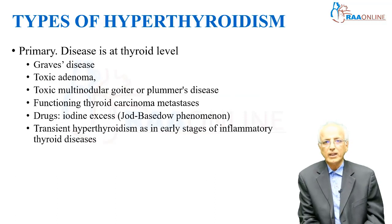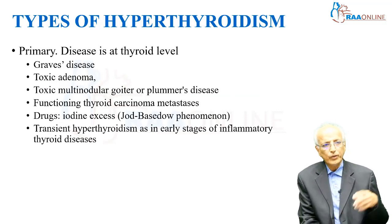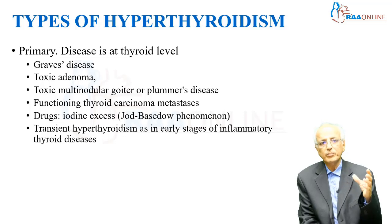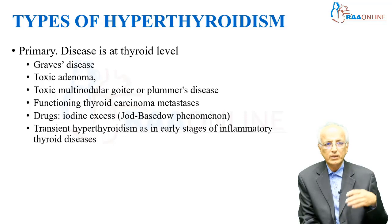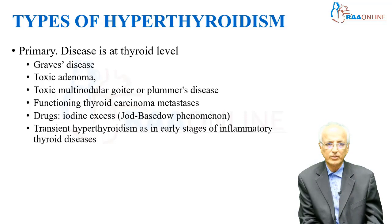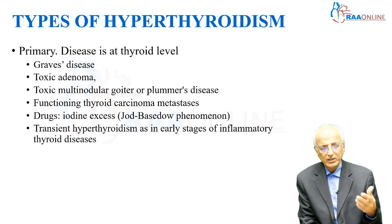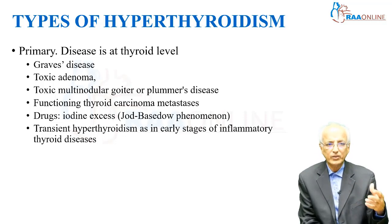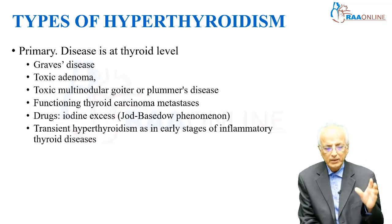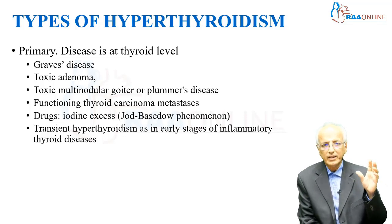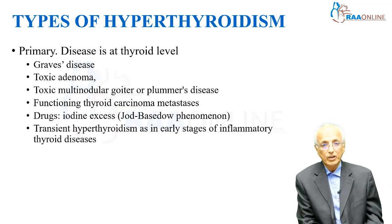Now coming to the types of hyperthyroidism — you classify hyperthyroidism depending on the organ responsible for the disease. When the primary disease is in the thyroid gland, you call it primary hyperthyroidism. There are ever so many diseases which can produce primary hyperthyroidism, for example Graves' disease, toxic adenoma — which is an autonomous nodule in the thyroid gland producing increased amounts of thyroid hormone — and toxic multinodular goiter, otherwise called Plummer's disease.